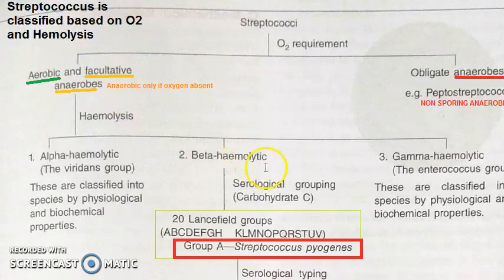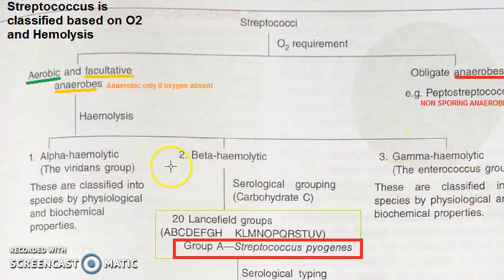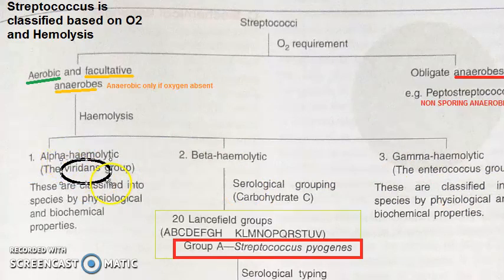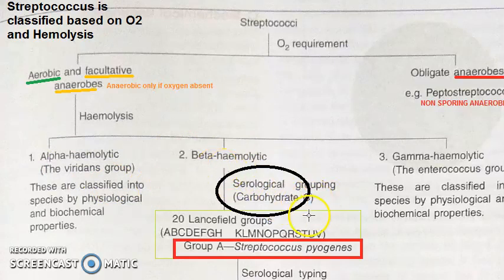They can also ask classification in a different way — Lansfield grouping or Griffith typing, which we'll come to. Now, under alpha hemolytic you have nothing but the viridans group. Under beta hemolytic, which is very important, comes the main streptococcus we study.